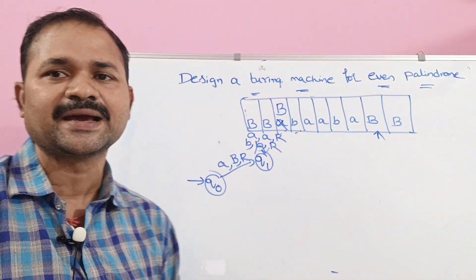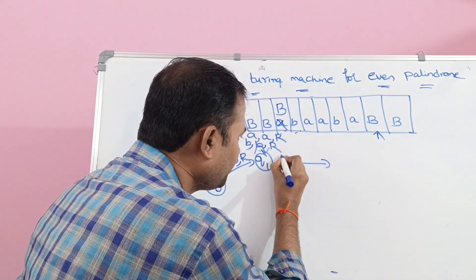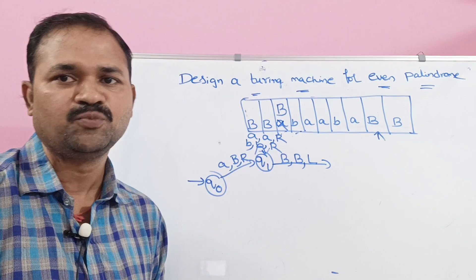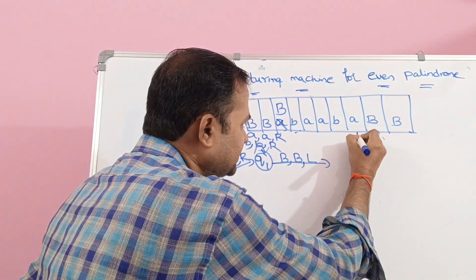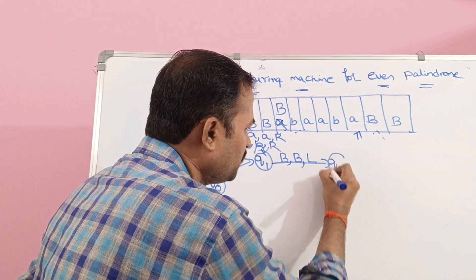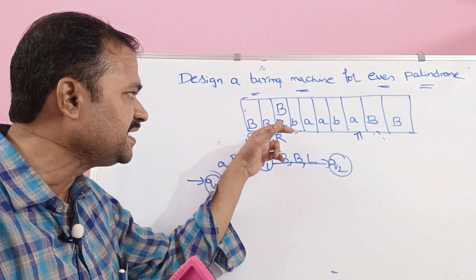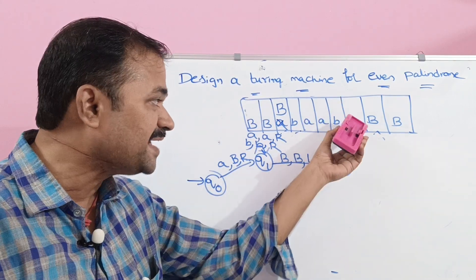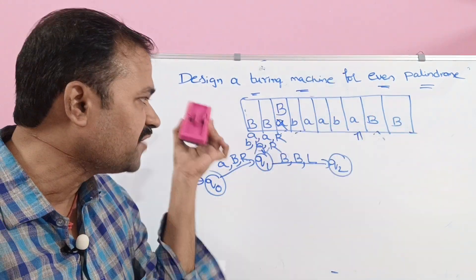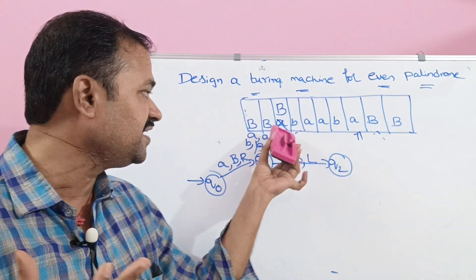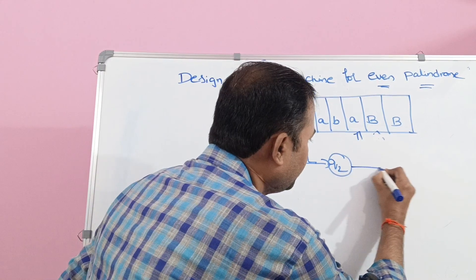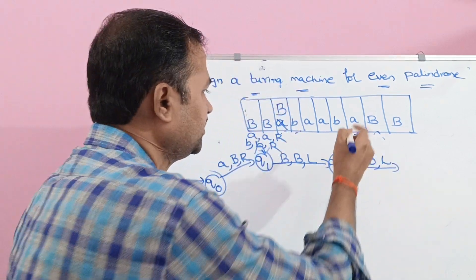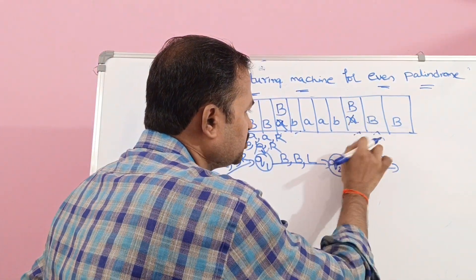Now we are at the last A, and we change from Q1 to Q2. Here the first symbol is A and the last symbol is also A, so these two are the same. Now replace this last A with a blank symbol and move the head one position to the left until we get the blank symbol. Whenever we read A on Q2, replace it with blank and move the head one position to the left. Then replace the corresponding A with blank and move left.